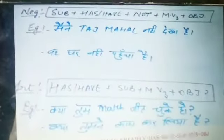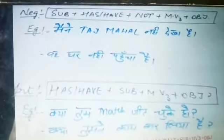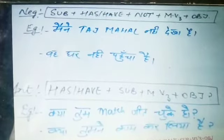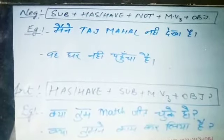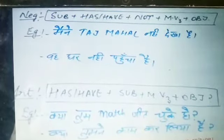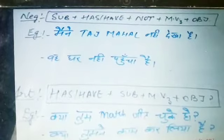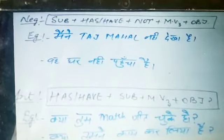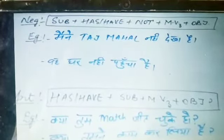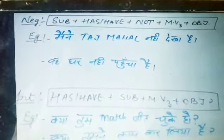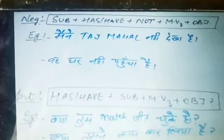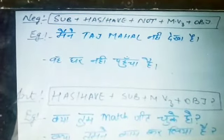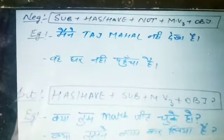Now look at the Negative Sentence. The formula is: Subject + Has/Have + Not + Verb third form + Object. There are no other changes. For example: 'We have not met him.' This is very easy — you can practice and try.